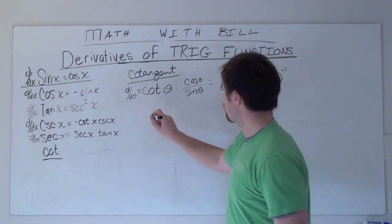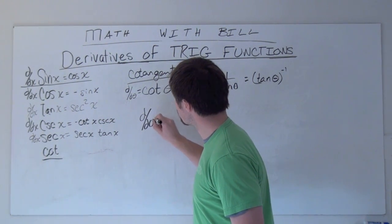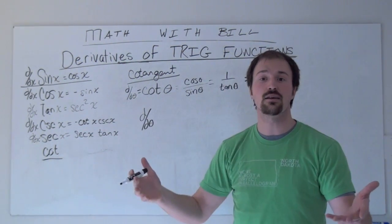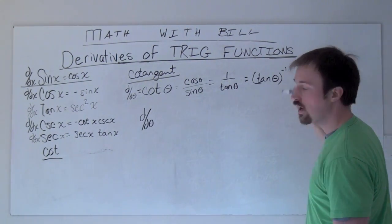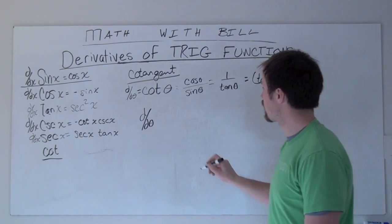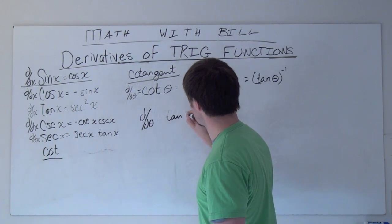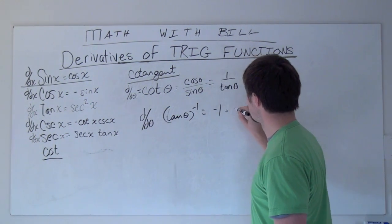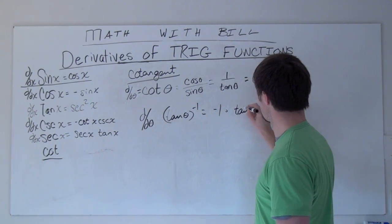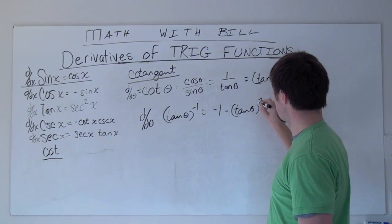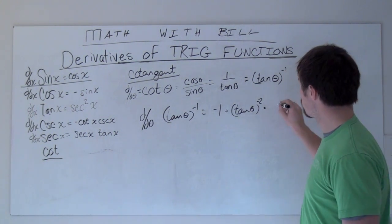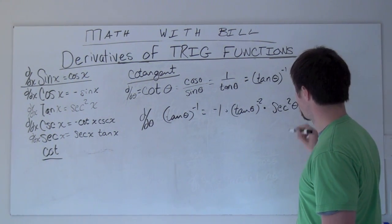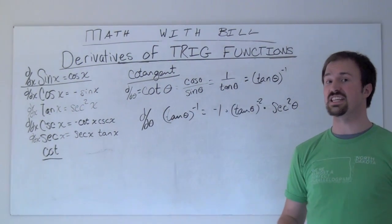That being said, if I want to take the derivative here now, it's pretty simple because I know the derivative of tangent, and I only have a general power rule. So, d/dθ of tan(θ) to the negative 1 power is going to be negative 1 times tan(θ) to the negative 2 power times the derivative, which is secant squared theta. Again, there's your derivative. You're already done.